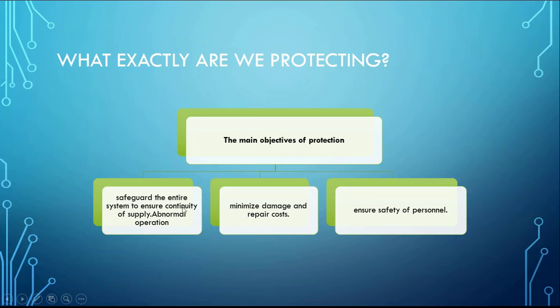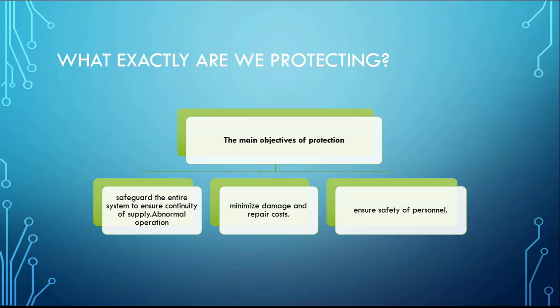The keyword here is continuity of supply. You don't want a city to stay in the dark because of a failure happening in a substation — a failure that probably just touched a part of a substation while some parts are still operational. If the system was not well set, then you have a situation where supply continuity is interrupted. You also have to minimize the cost — you don't want a whole substation on fire, transformers, generators, current transformers, and circuit breakers all damaged. You want to limit the damage so that your repair cost is minimized.